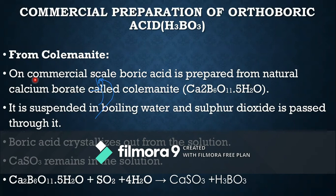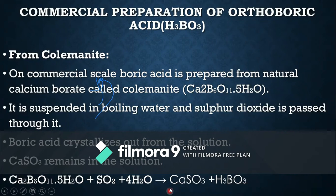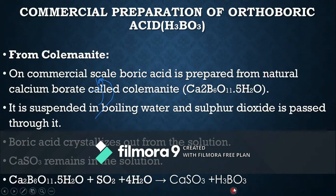Boric acid is also prepared from ores of calcium and boron minerals (collimanite). The ores are boiled, and in the boiling ore sulfur dioxide gas and steam are passed. This produces calcium sulfate, which precipitates out, while boric acid remains in the solution and can be separated.